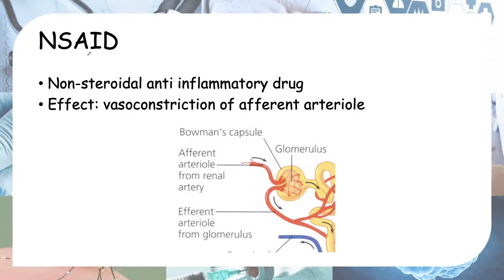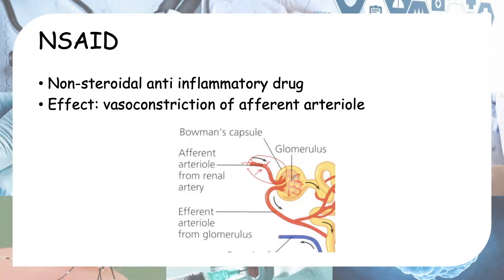So what do NSAIDs do? NSAIDs are non-steroidal anti-inflammatory drugs used for pain relief — for example, in gout. However, long-term NSAID use can have a harmful effect on your kidneys. The net effect is vasoconstriction of the afferent arteriole, so less blood is going into your glomerulus.